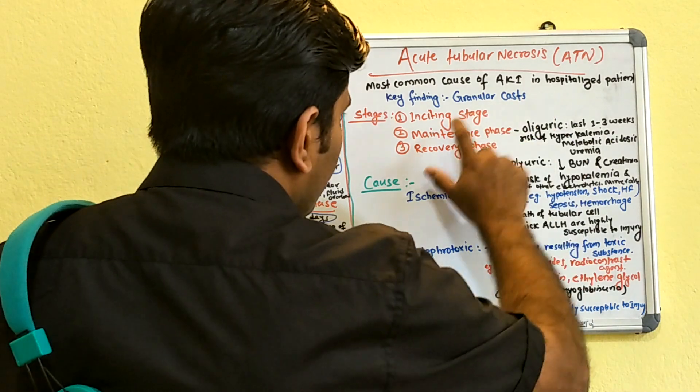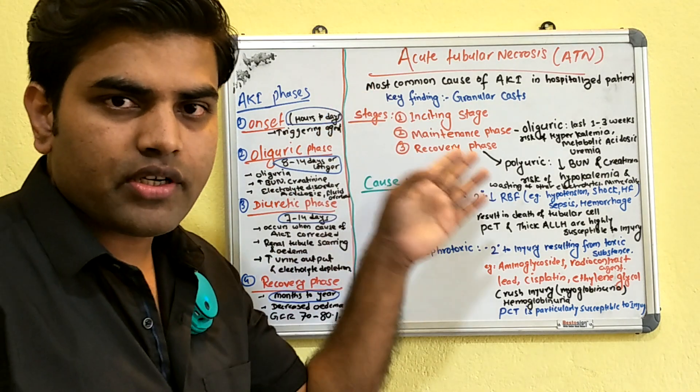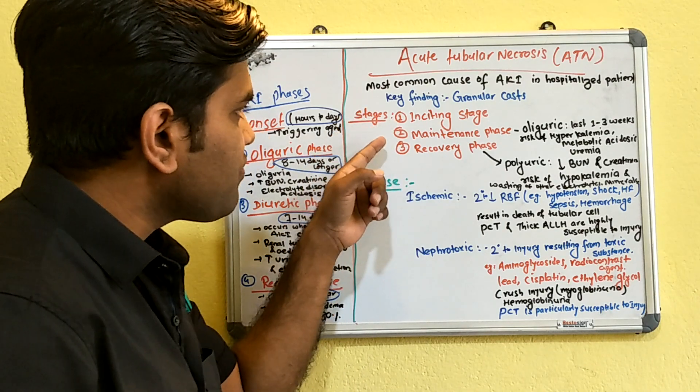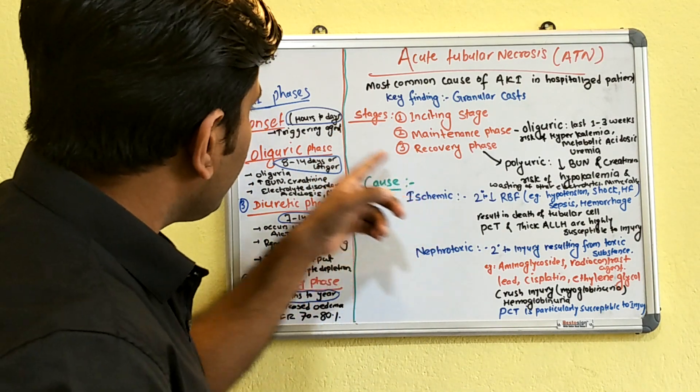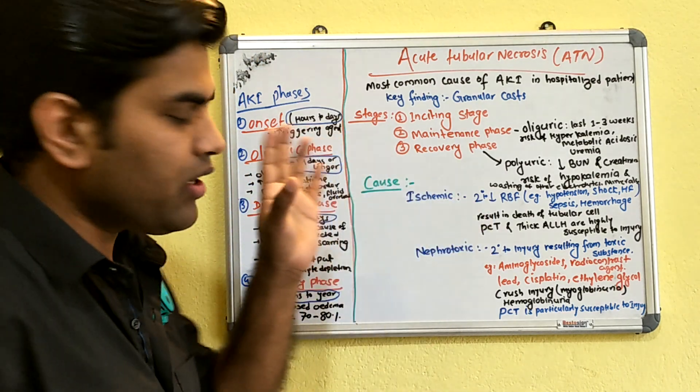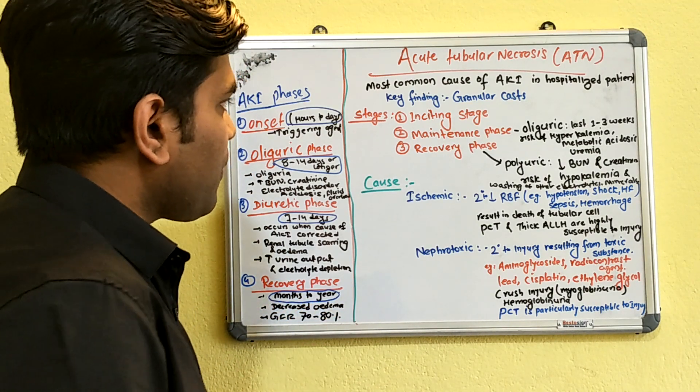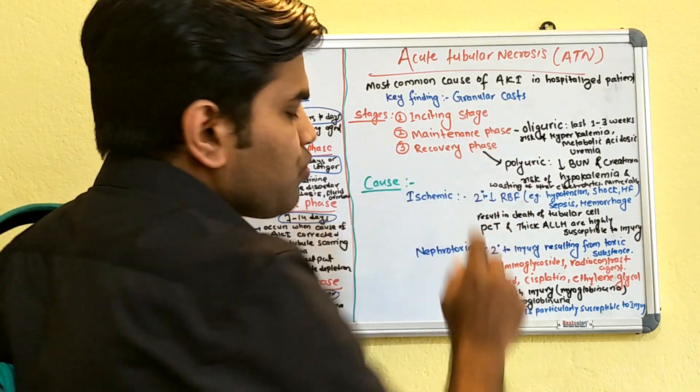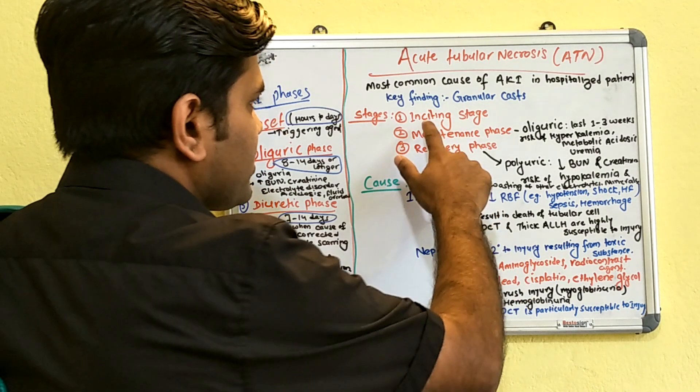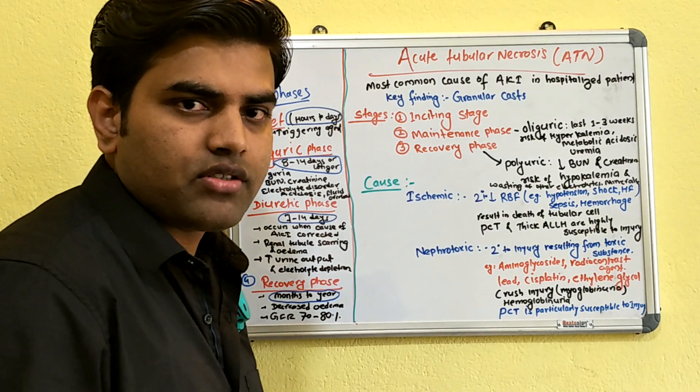Talking about the stages, there are three stages according to USMLE First Aid: initiating stage, maintenance phase, and recovery phase. These correlate with the AKI phases. The initiating stage is the onset of damage due to ischemia or offending drugs or toxins.